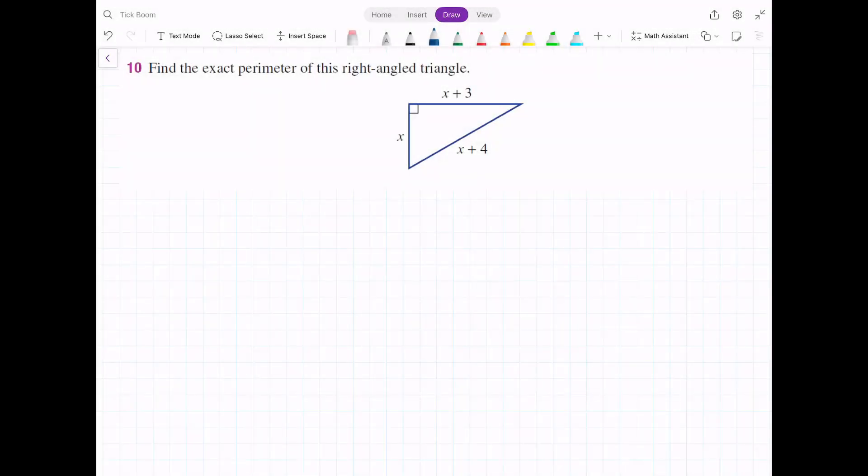For this question we're being asked to find the exact perimeter of this right-angled triangle. In the diagram we've got our triangle with unknown sides of x, x plus 3, and x plus 4.